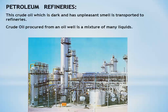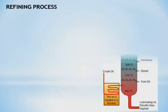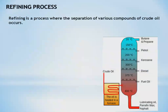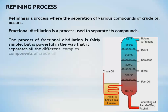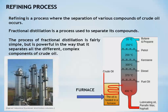Crude oil procured from an oil well is a mixture of many liquids. The refining process — also called fractional distillation — is a process where the separation of various compounds of crude oil occurs. Fractional distillation is fairly simple but powerful in the way it separates all the different complex components. On the left side of the image we can see a typical industrial fractional distillation column, and on the right side is the process of how fractional distillation takes place.